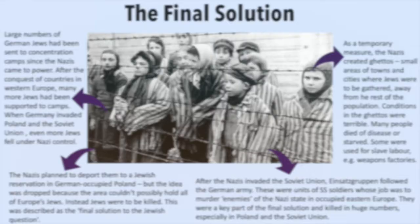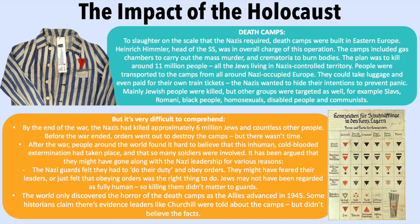To slaughter on the scale that the Nazis required, death camps were built in Eastern Europe. Heinrich Himmler, head of the SS, was in overall charge of this operation. The camps included gas chambers to carry out the mass murder and crematoria to burn bodies. The plan was to kill around 11 million people — all the Jewish people living in Nazi-controlled territory.